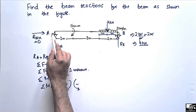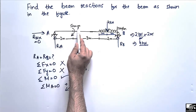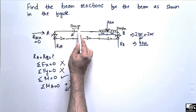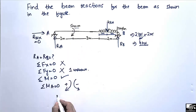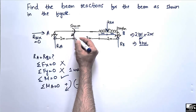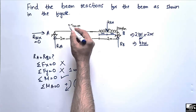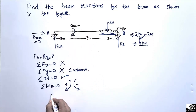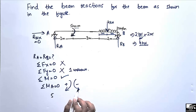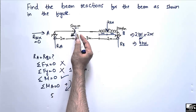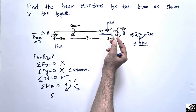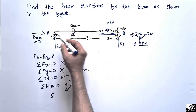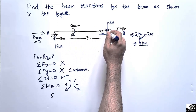The first term is the 5 kilonewton-meter moment. About point A, it is acting in the clockwise direction, so it is taken as positive: +5 kNm. Next, the 4 kilonewton point load creates a moment about point A in the clockwise direction since it is acting downward, so it will also be positive.